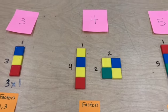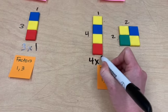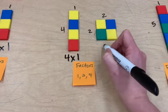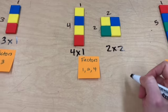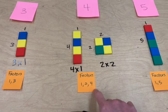For 4 tiles, we were able to make 2 different rectangles. The first rectangle we could make was 4 by 1 and the other one was 2 by 2. So the factors for 4 are 1, 2, and 4.